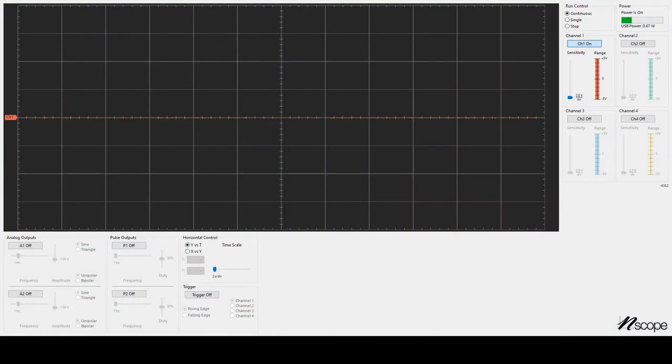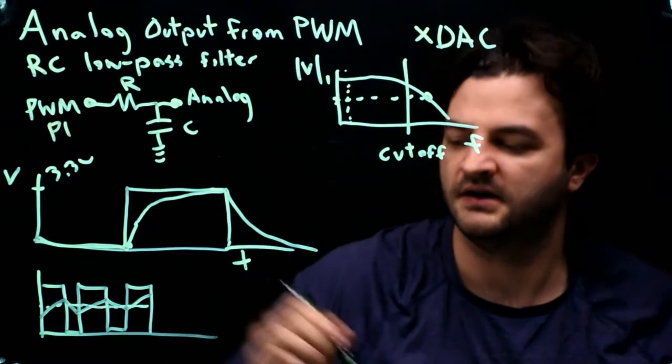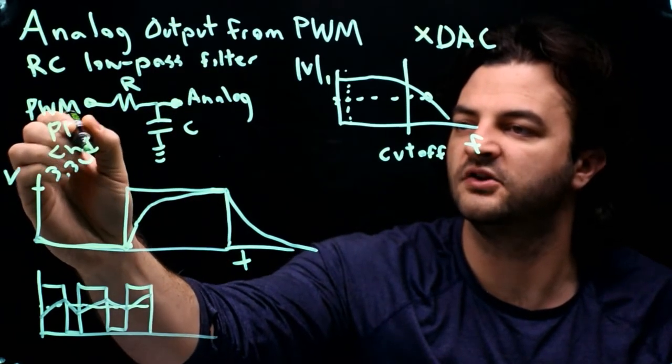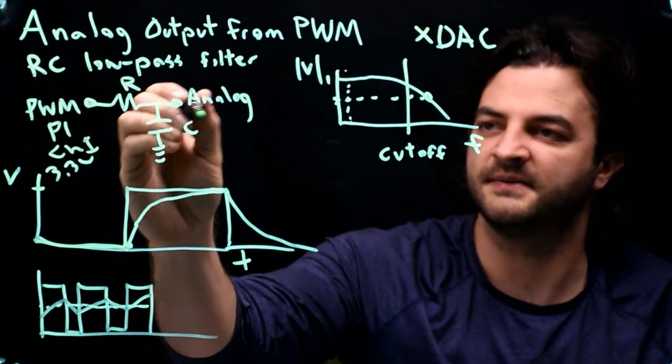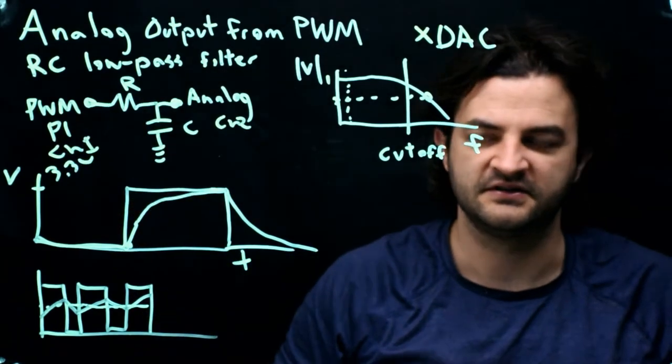An N-scope is an inexpensive and portable oscilloscope power supply and function generator. In this case, the function generator part is the interesting aspect. So instead of using PWM from the PIC, I'm going to use the pulse output from the N-scope. For PWM, I'm using the P1 pin on the N-scope, and I'm reading that pin with channel 1. And then the output, the voltage across the capacitor, I'm reading with channel 2. It's always nice to see both the input and the output to the filter to see exactly what's happening.